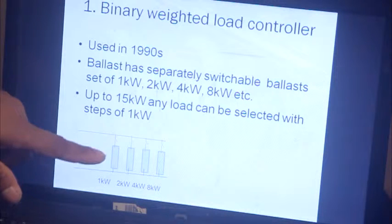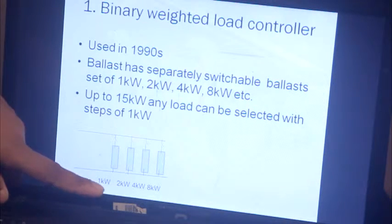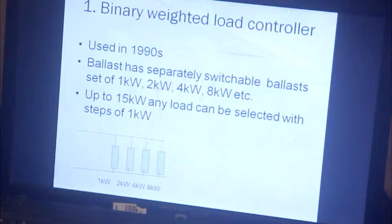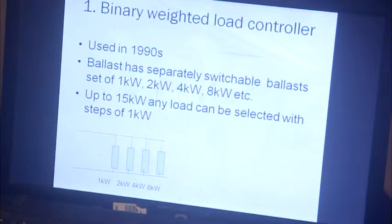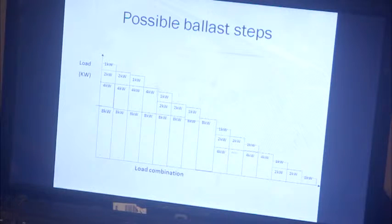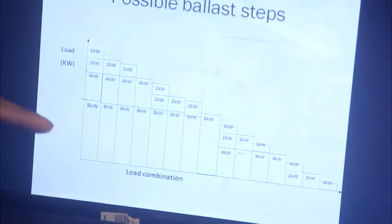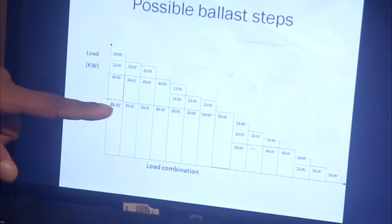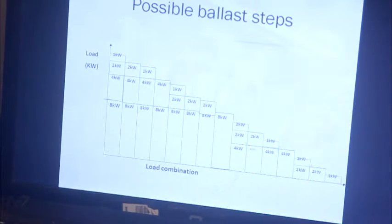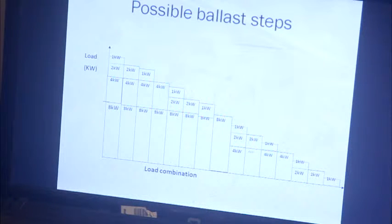From this combination, we can select 0 to 15 kW at any value with 1 kW accuracy. For example, to select 13 kW, we combine 8 kW plus 4 kW plus 1 kW. To select 7 kW, we use 4 plus 2 plus 1. The controller automatically switches these loads on as required to match the excess power. The graphical resolution shows different ballast kW capacities and their relevant combinations. If we want 7 kW, we select 4 kW plus 2 kW plus 1 kW. This is the advantage of the binary load controller.